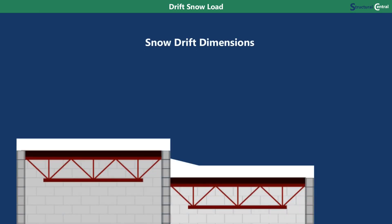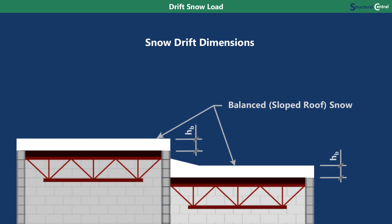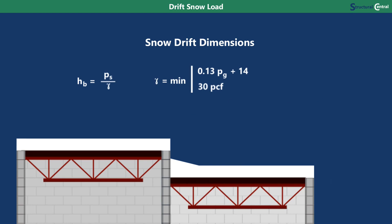Now let's see how the snow drift dimensions are applied to an actual roof. The balanced snow load occurs everywhere on the roof. Its height is Hb, determined by dividing the balanced snow load PS by the density of snow gamma — which can be calculated using the formula shown. The next important dimension is Hd, the snow drift height determined from the chart or formula. It is the height of the triangular portion of the snow drift. Multiplying it by the density of snow gives the drift surcharge load, Pd.